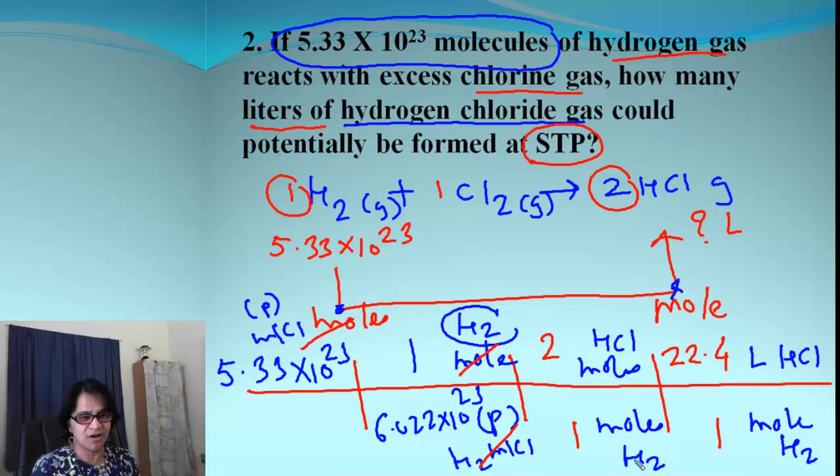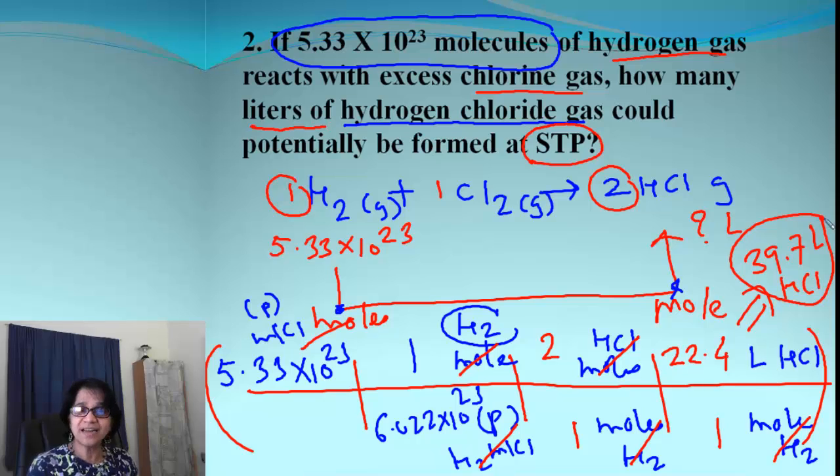If you complete all those formalities, the last step is simply canceling the units and simplify and get the answer, for which I am getting the answer 39.7 liters of hydrogen chloride gas. So what do you think? It is exactly same theory, same principles, and we are using it for gases using 22.4 liters of volume at STP, which is standard temperature and pressure. I hope you enjoyed the video. I will see you in the next video. Bye-bye.